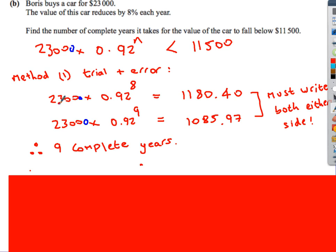So after 8 years, 23,000 times by 0.92 to the power of 8 gives us 11,800. Well, that's not below 11,500.